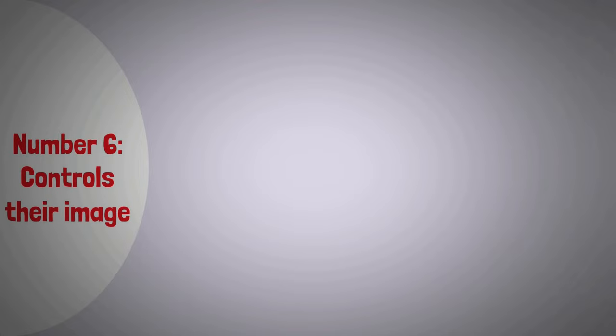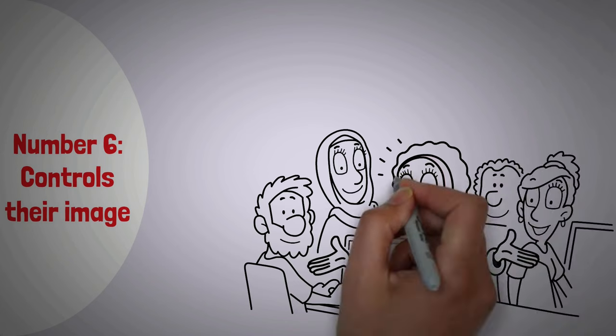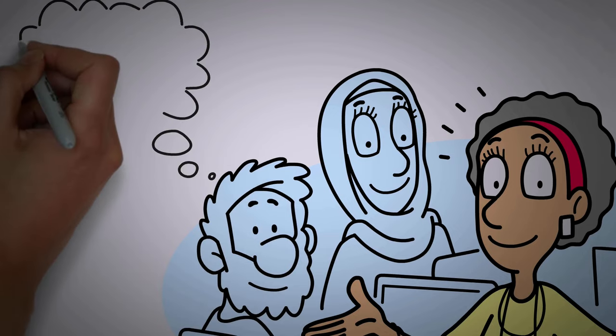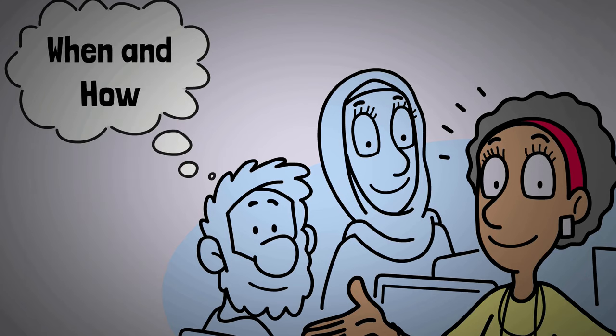Number 6: Controls Their Image. Operating in the shadows isn't about hiding—it's about being in charge. When you're not the center of attention, you can decide what side of your story you want to present. You can pick when and how you want to open up.